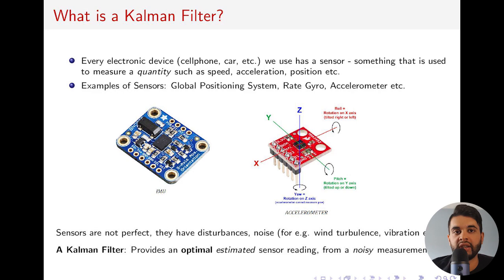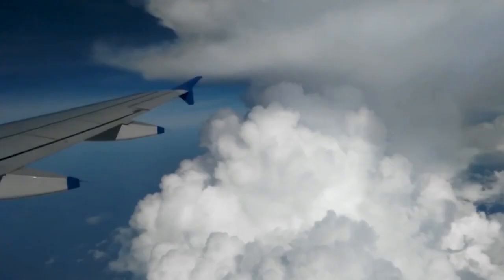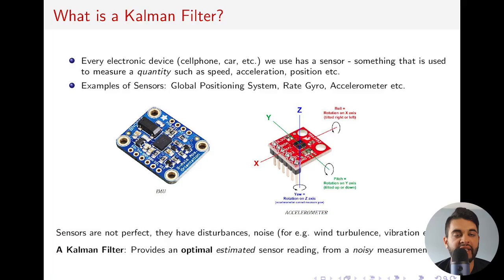The Kalman filter is very important in engineering, so let's talk about it first. Every electronic device in the real world — a cell phone, an airplane — has a sensor used to measure a value, for example a GPS or an accelerometer. But in the real world, sensors have noise; they aren't perfect. Let's say you're flying in a plane at very high speed — the plane will have sensors on it.